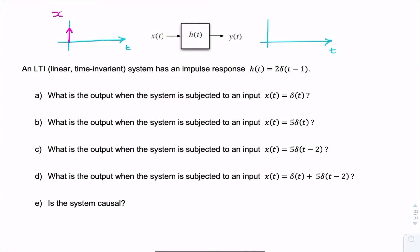So if x(t) was an impulse centered at 0, the output would be the impulse response. So y(t) would be an impulse of weight 2 at t equals 1. So y(t) is the impulse response. That's what's given in the question.